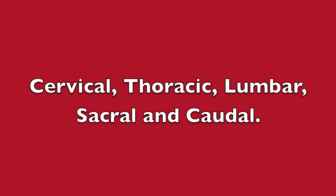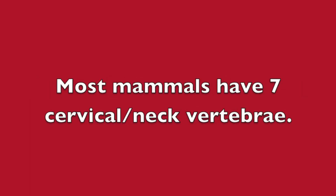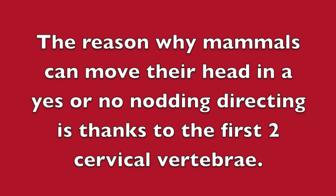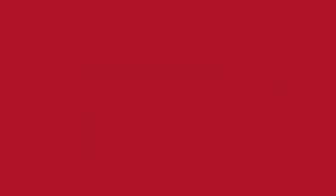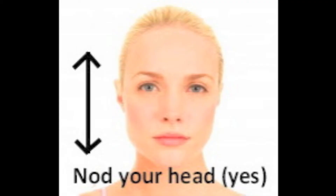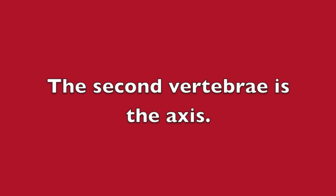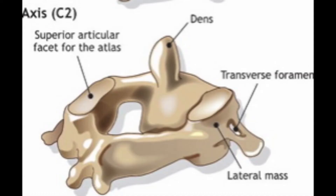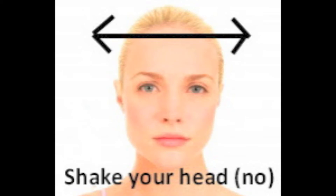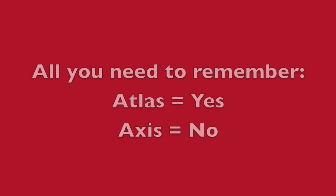The five groups are: cervical, thoracic, lumbar, sacral, and caudal. Most mammals have seven cervical neck vertebrae. The reason mammals can move their head in a yes or no nodding direction is thanks to the first two cervical vertebrae. The first cervical vertebra is the atlas — movement at this joint produces vertical movement of the head, the yes or nodding motion. The second vertebra is the axis — movement of the joint between the atlas and the axis produces rotational movement of the head, like shaking your head no. Remember: atlas equals yes, axis equals no.